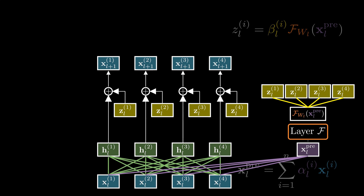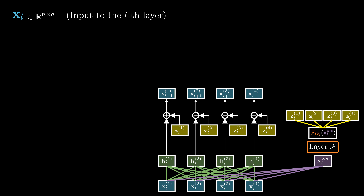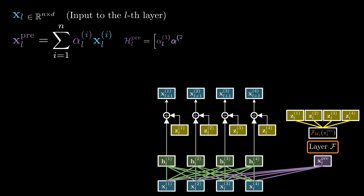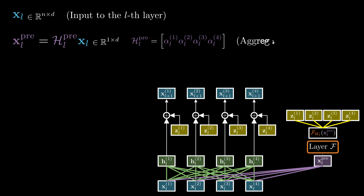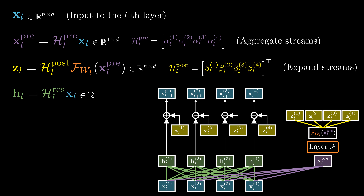Now let's write this down more formally. We stack the features from multiple streams along the row dimension. Each feature is a d-dimensional vector, so the matrix X_L has dimensions n×d, where the expansion rate n is 4. Feature aggregation involves computing a weighted combination of features from residual streams, which we represent as matrix multiplications. After computing the output of the layer, we expand and distribute the features to multiple residual streams by multiplying an n×1 weight vector with the 1×d input features. Feature mixing across multiple streams is achieved using an n×n matrix. Finally, the output is the addition of h and z.